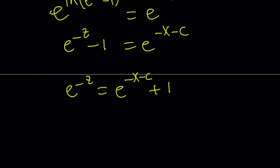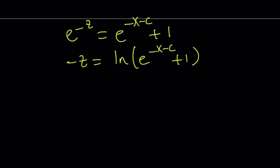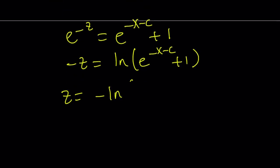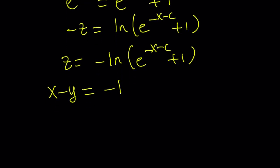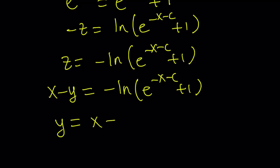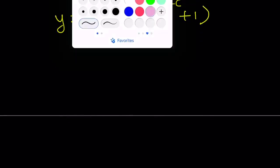Then taking ln of both sides gives us negative z equals ln of (e to the power negative x minus c plus 1). Negating both sides: z equals negative ln of (e to the power negative x minus c plus 1). But remember we used substitution, so z equals x minus y. Replacing z with that and solving for y, we get y equals x plus ln of (e to the power negative x minus c plus 1). That's our first method answer.